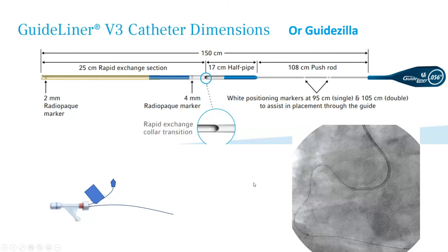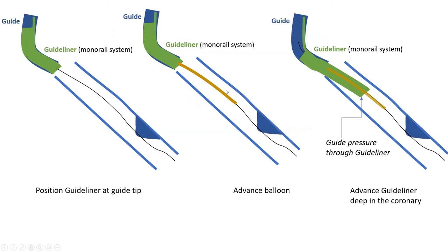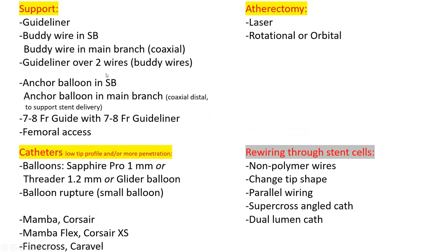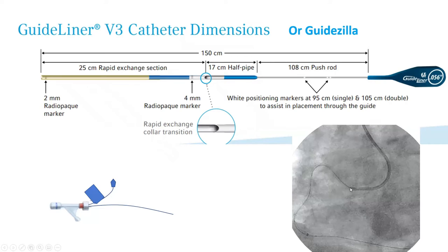For first-year fellows: how to advance the guideliner. You have your guide in, you have your wire. You cannot advance the guideliner into the artery without having some balloon that will serve as a cushion — a dilator to prevent the guideliner edges from injuring the vessel. So you need a balloon in place. First, advance the guideliner over the wire all the way into the tip of the guide, then advance a balloon, then advance the guideliner over the balloon. You cannot have a balloon in place when you first advance the guideliner, because the back end of the balloon will prevent you from advancing the guideliner over it.